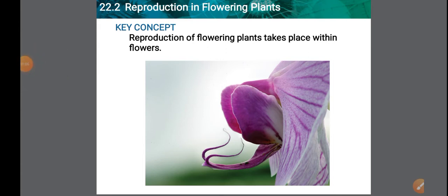A flower that contains both male and female parts is known as a complete flower. A complete flower contains sepals, petals, androecium or stamen, and gynoecium or carpel or pistil. Some flowers like corn and papaya contain either male or female reproductive organs and can produce only one type of gamete. They are called incomplete flowers.